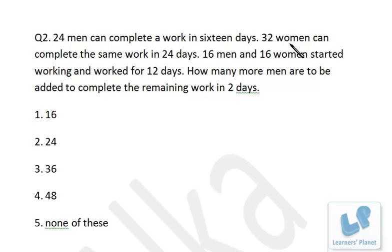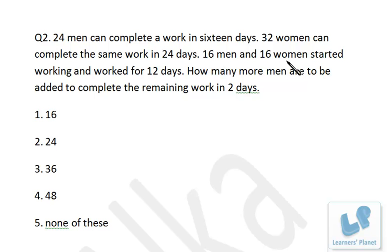So precisely, the efficiency of one man equals two women. Now in the next part: 16 men and 16 women started and worked for 12 days. Since one man equals two women, 16 women are equivalent to 8 men. So 16 men plus 8 men gives us 24 men total, and we are already given that 24 men can complete the work in 16 days.